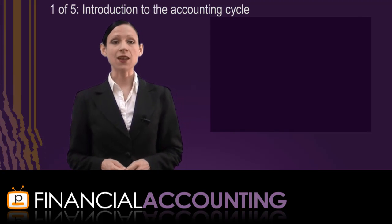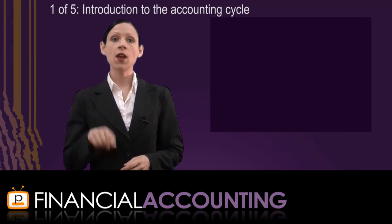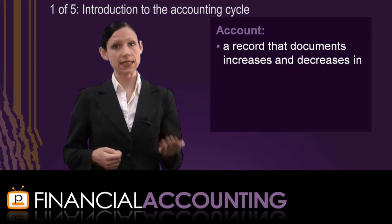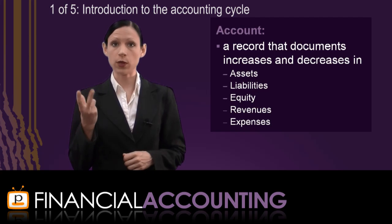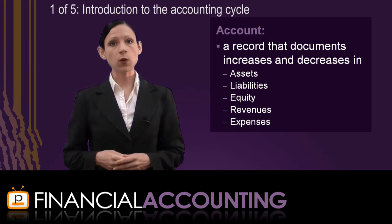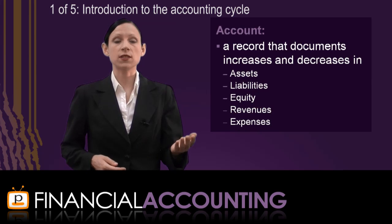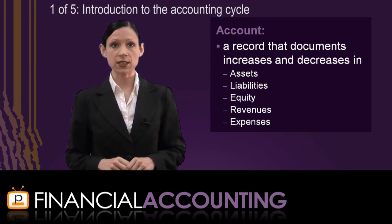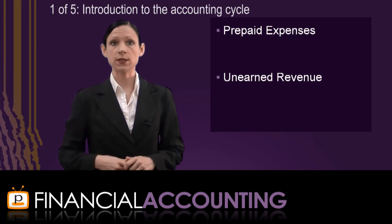In addition to the accounting cycle, there are a few more concepts we need to know about. The first is the account, which is a record that documents increases and decreases in specific asset, liability, equity, revenue, or expense items. From chapter one you should be familiar with account names such as cash or accounts receivable, but there are two new accounts introduced in this chapter: prepaid expenses and unearned revenues.